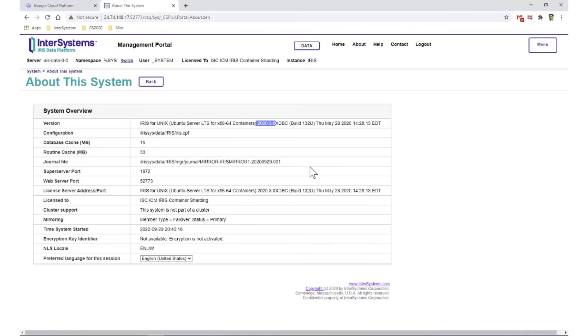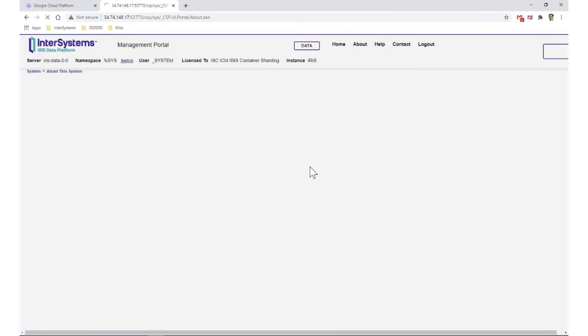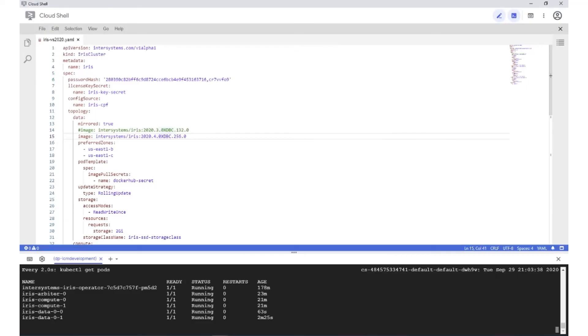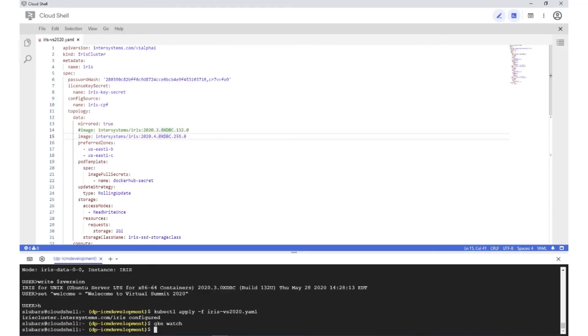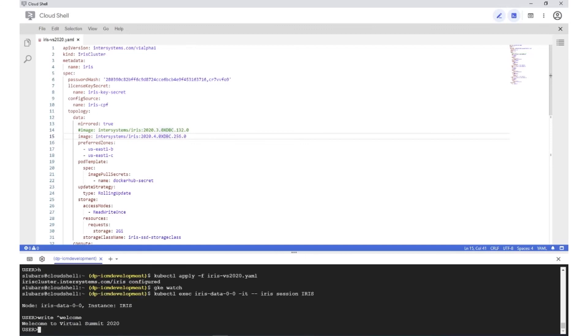We can go refresh here in the management portal. And we do see that the version is now 2020.4. We can run our session again and write out that global we set earlier. And we see that the data is intact, that the persistent volume was reattached to the new container.